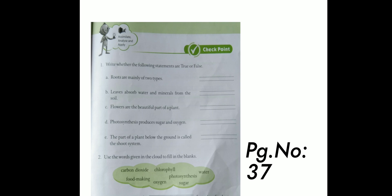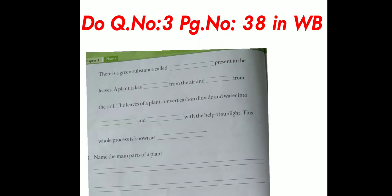Next, second question. Use the words given in the cloud to fill in the blanks. There is a green substance called dash present in the leaves. A plant takes dash from the air and dash from the soil. The leaves of a plant convert carbon dioxide and water into dash and dash with the help of sunlight. This whole process is known as dash.